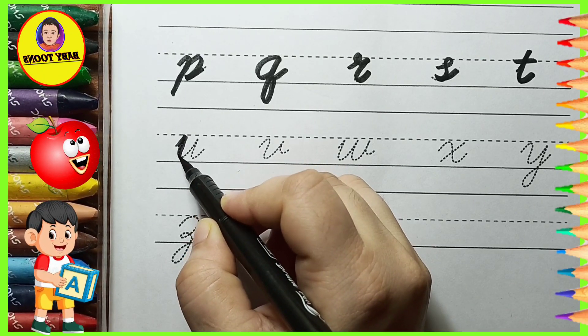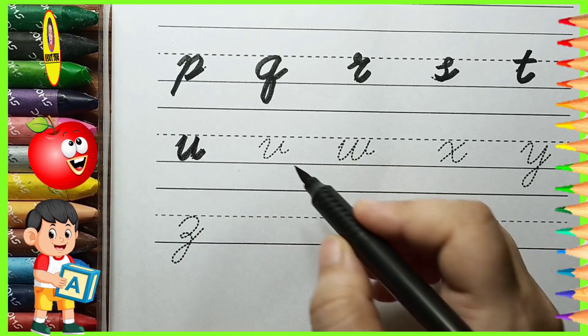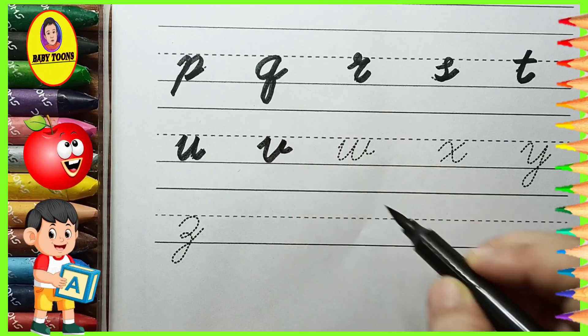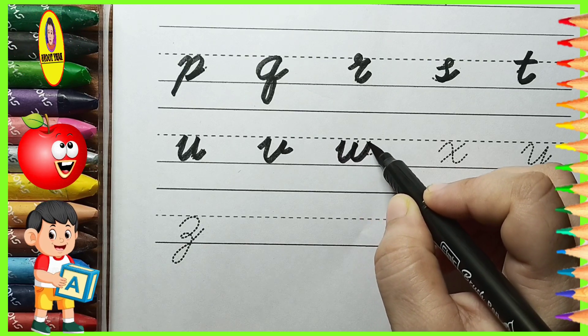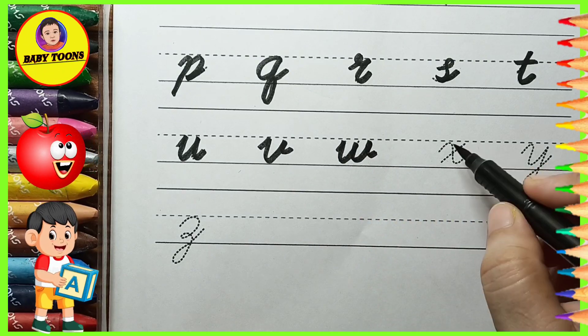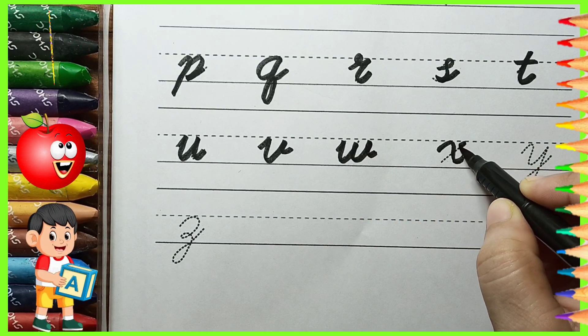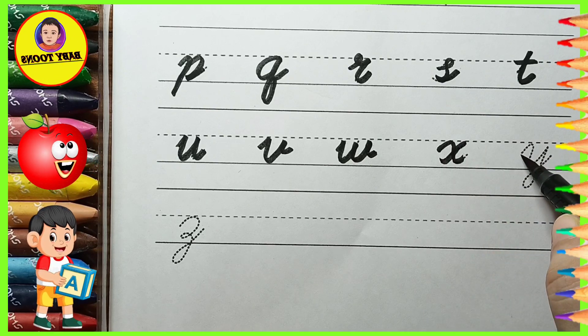U. U for unicorn, V. V for vulture, W. W for wall, X. X for xylophone, Y. Y for yoga, Z. Z for zip.